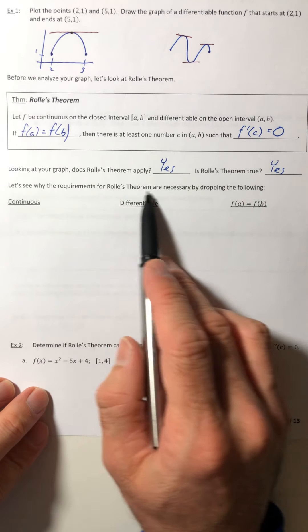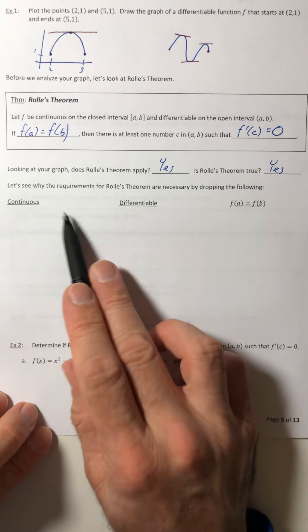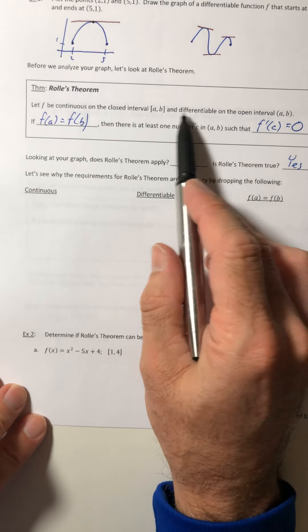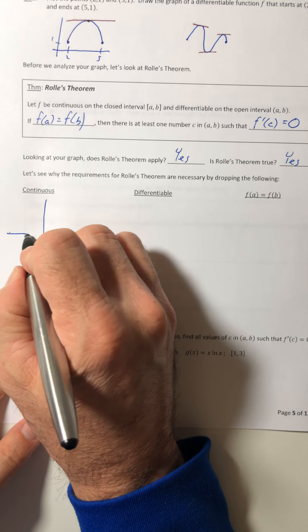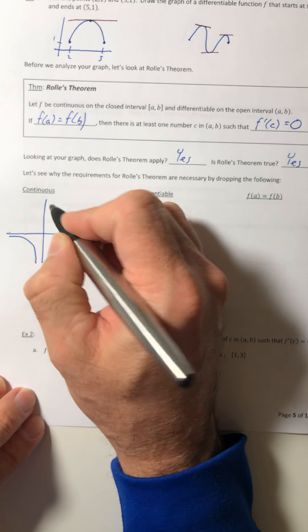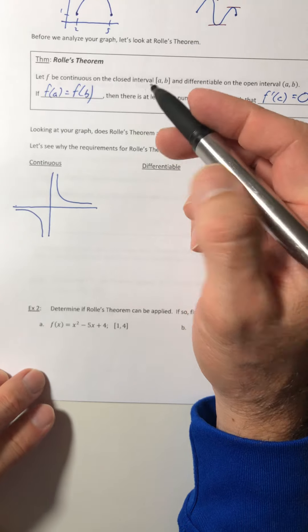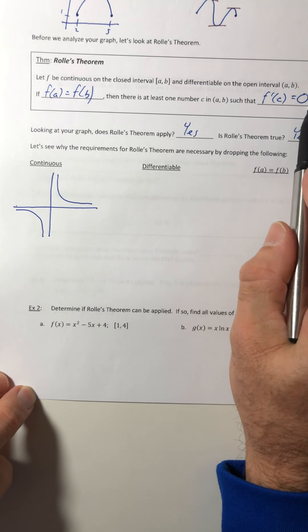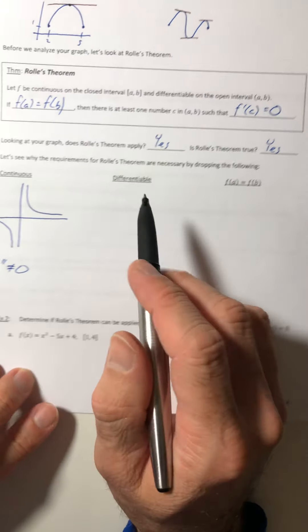Okay. So let's look at the requirements for Rolle's theorem and see why they're necessary. Because we're going to drop out, one at a time, each of these requirements. So the first one is that it had to be continuous. Well, let's drop that out. Let's just say it had to be differentiable and f(a) had to equal f(b). So for continuous, you know, a big thing would be like a vertical asymptote in there. Well, if you look at this graph, there's nowhere where the derivative equals zero. So the theorem doesn't apply. It wouldn't hold.